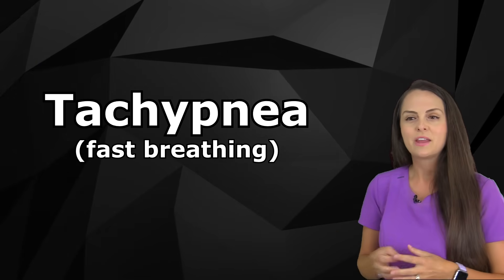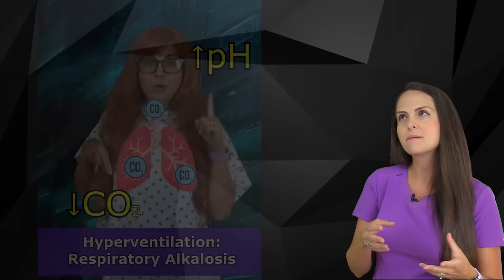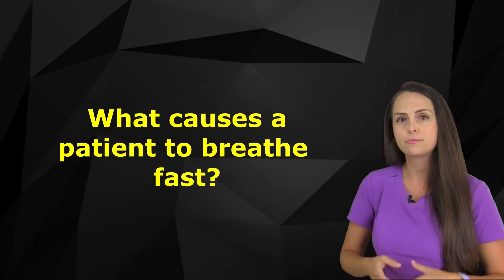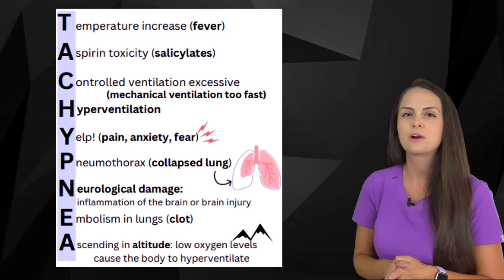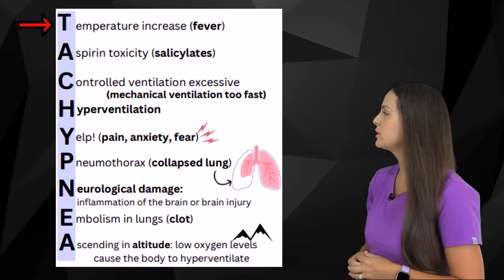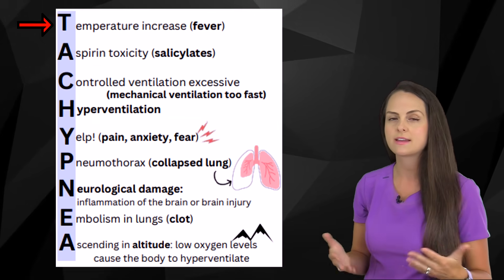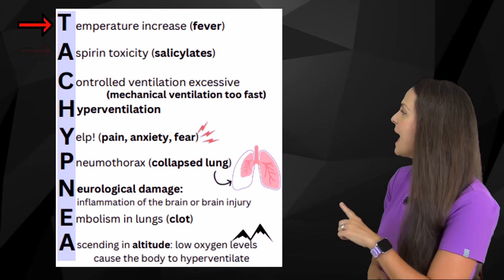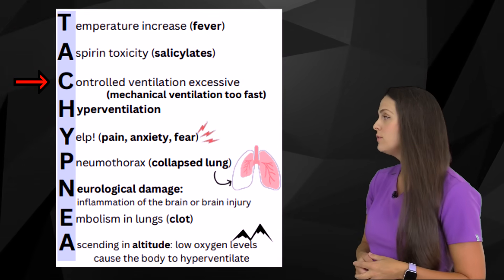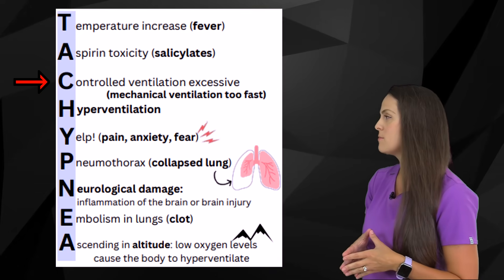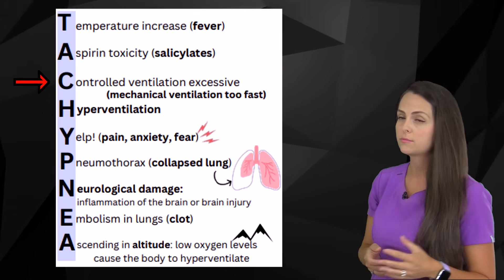The main cause is tachypnea — whenever the patient is breathing really fast, they're exhaling that CO2. To help remember the conditions that cause rapid breathing, we use the word TACHYPNEA. T is for temperature increase or fever, which can cause really fast breathing and blow off CO2, putting the patient in respiratory alkalosis. A is for aspirin toxicity, like salicylates. C is for controlled ventilation that is too excessive — on mechanical ventilation set too fast, blowing off too much CO2.